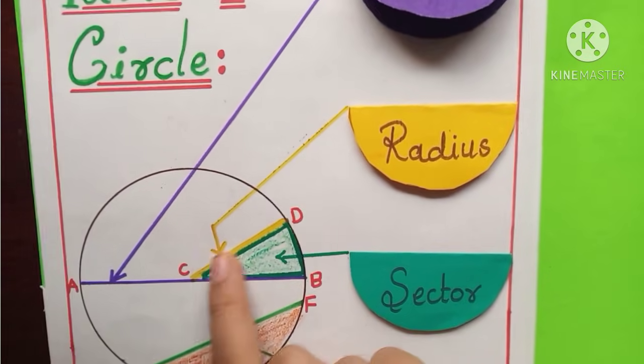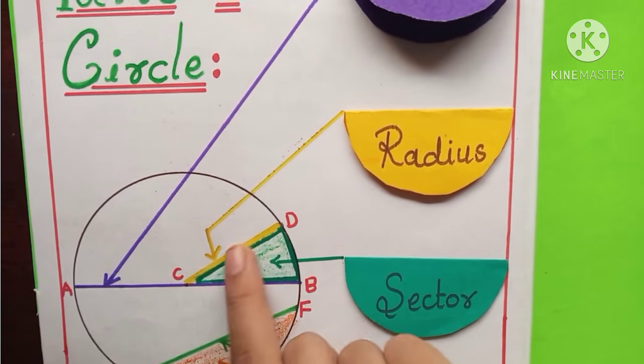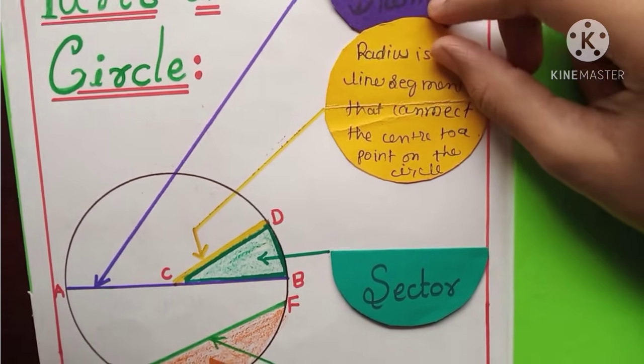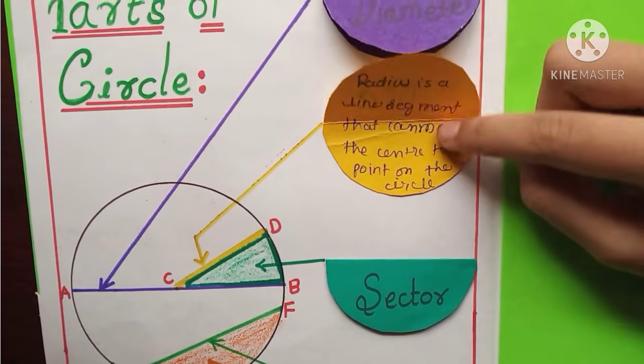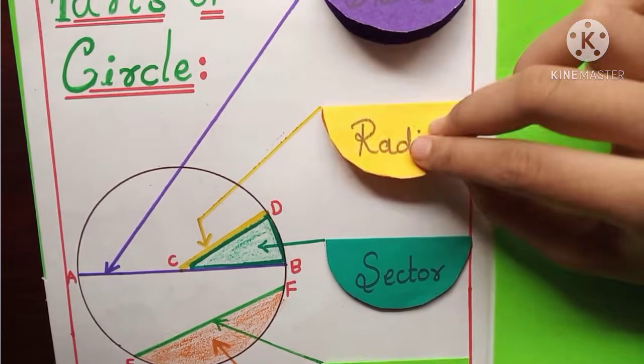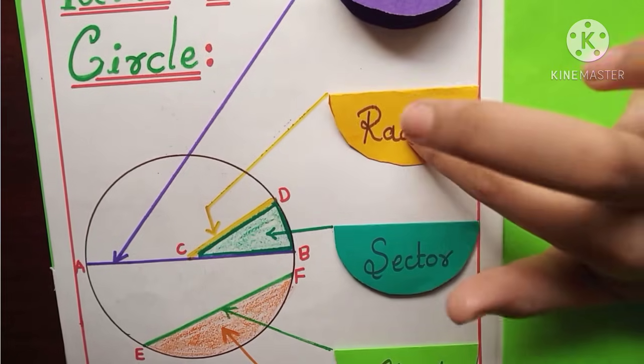And the next is radius. Here you can see the yellow line. That's radius. This is radius. Radius is a line segment that connects the center to a point on the circle. This is a circle. This was the definition of radius.